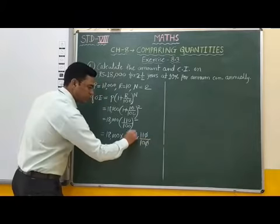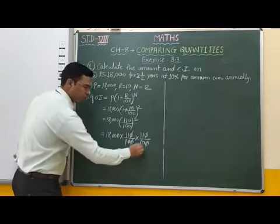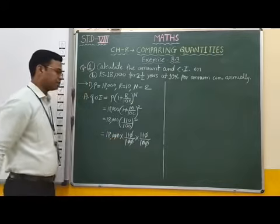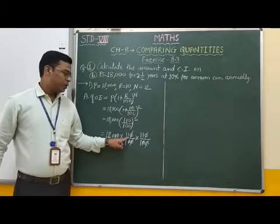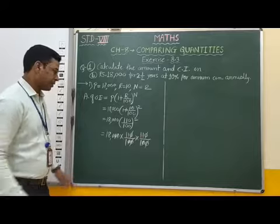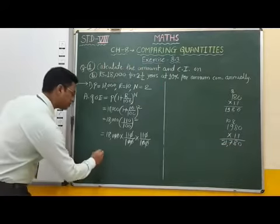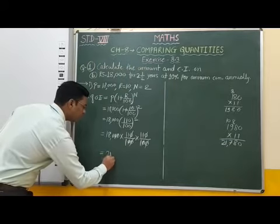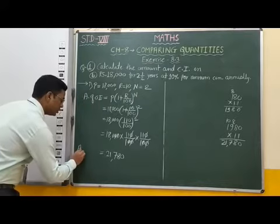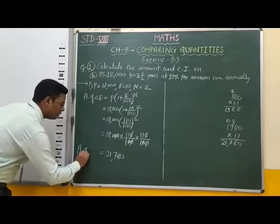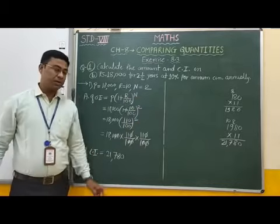Now we cancel the zeros. After cancellation, in the numerator we have 180 × 11 × 11. Multiplying gives 21,780. Therefore, the amount at compound interest for 2 years is equal to rupees 21,780.